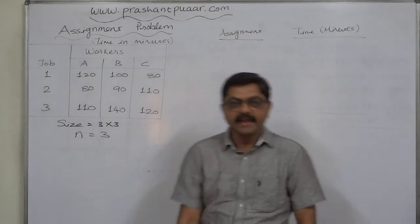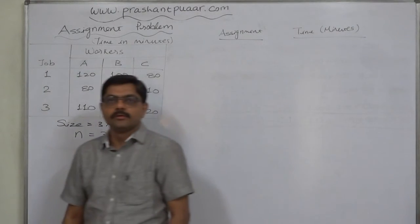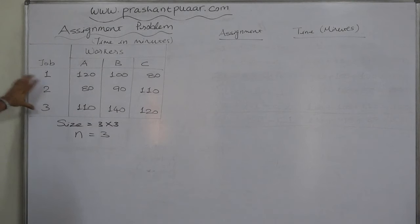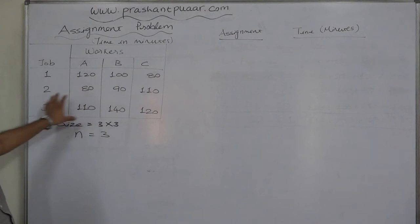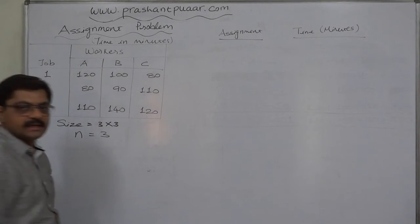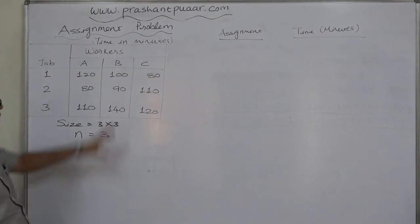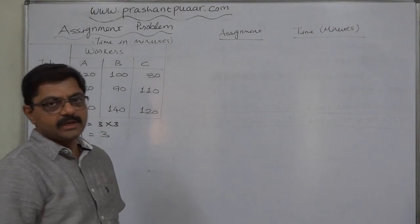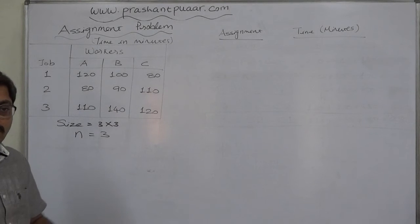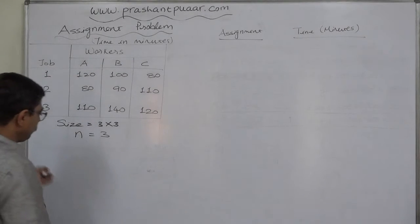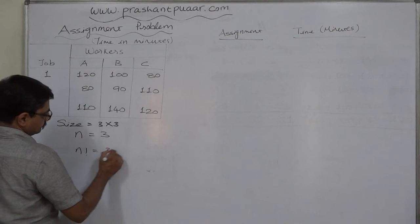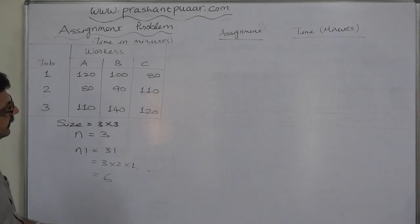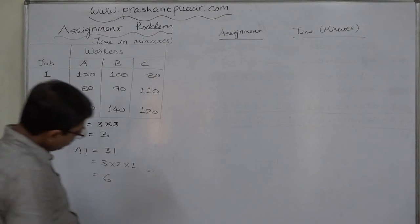Hello friends, let us take a case of an assignment problem and solve it through the complete enumeration method. This is an assignment problem where there are three workers A, B, and C, and three jobs 1, 2, and 3. All three workers can do all three jobs, but the time taken by them is different. This is called an assignment problem of size 3x3, so n is 3. If we use complete enumeration method, the number of possible assignments is n factorial, which gives us 6 different ways to assign three jobs to three workers.